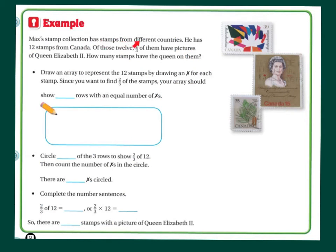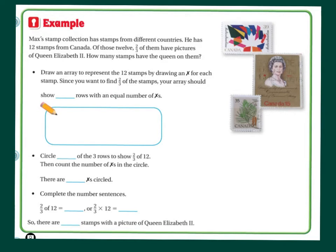Mac's stamp collection has stamps from different countries. He has 12 stamps from Canada. Of those 12 stamps, two-thirds of them have pictures of Queen Elizabeth II. How many stamps have the Queen on them? We're going to draw an array to represent the 12 stamps by drawing an X for each stamp. Since you want to find two-thirds of the stamps, your array should show how many rows? We look at the denominator — it has a three — so we're going to want three rows.